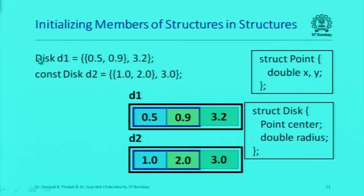I specify two values — one for the member named center and the other for the member named radius. To specify an initial value for the member named center, just like I would for an object of type point, I specify the values of its members within braces. What is important is that the order in which you specify these initialization values is the same as the order in which you declared the data members.